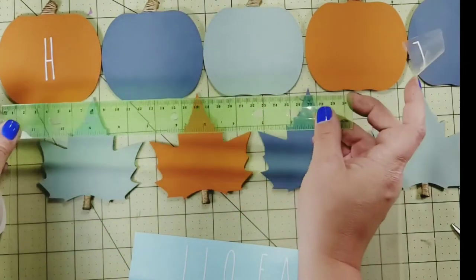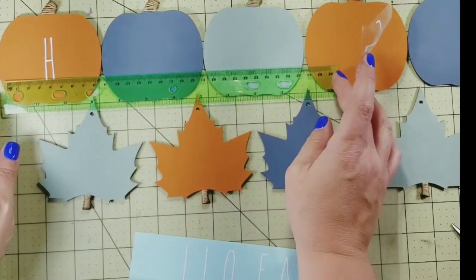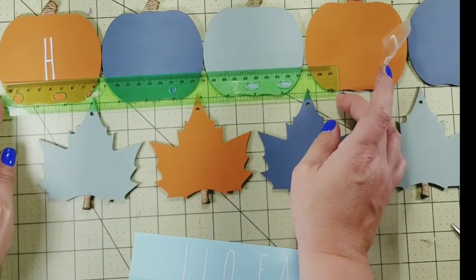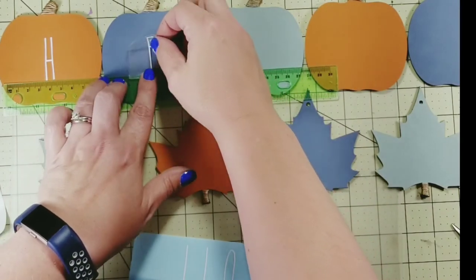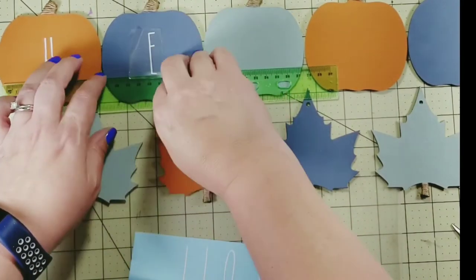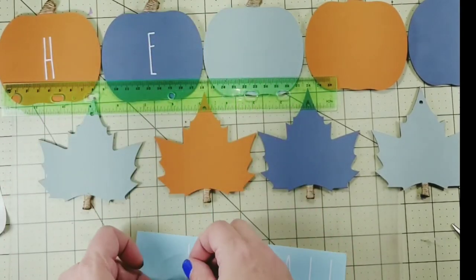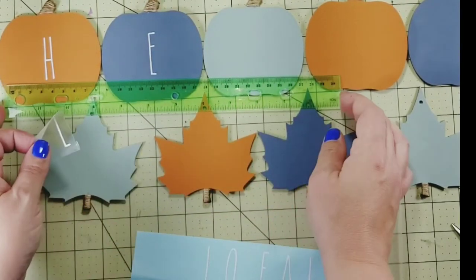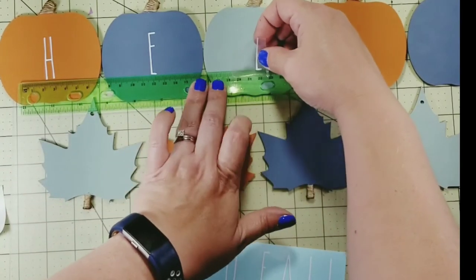So then I'm going to add some vinyl letters to the front of each of these pumpkins. This is going to spell out Hello Fall. And I cut this vinyl with my Cricut using the font The Skinny. This is just Oracle 651. And the transfer that I'm using is just the Duck brand contact paper that I buy in a huge roll at Walmart. It works wonderfully for transferring vinyl.